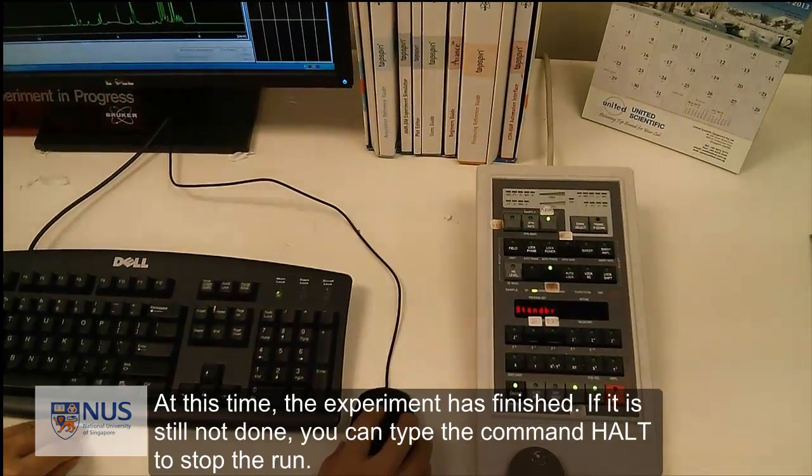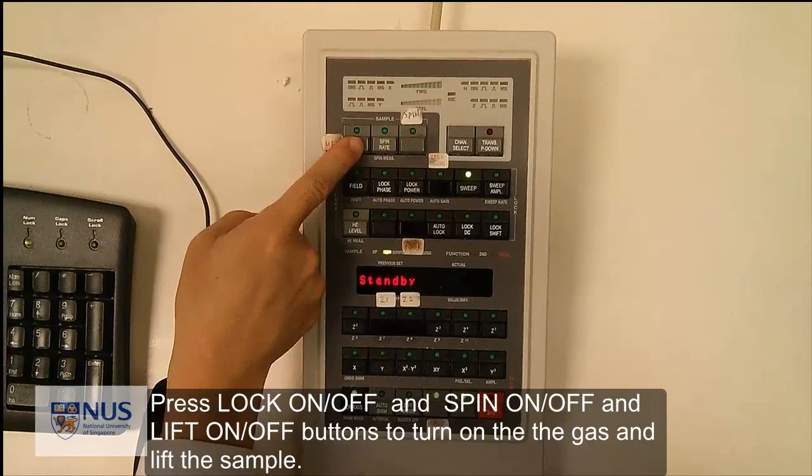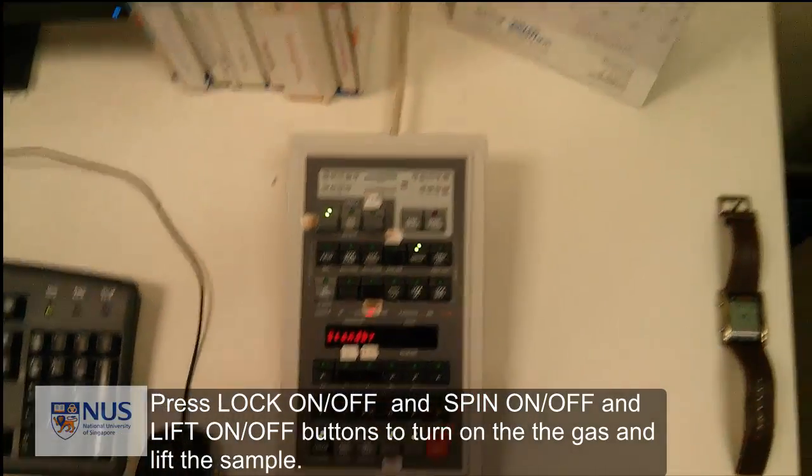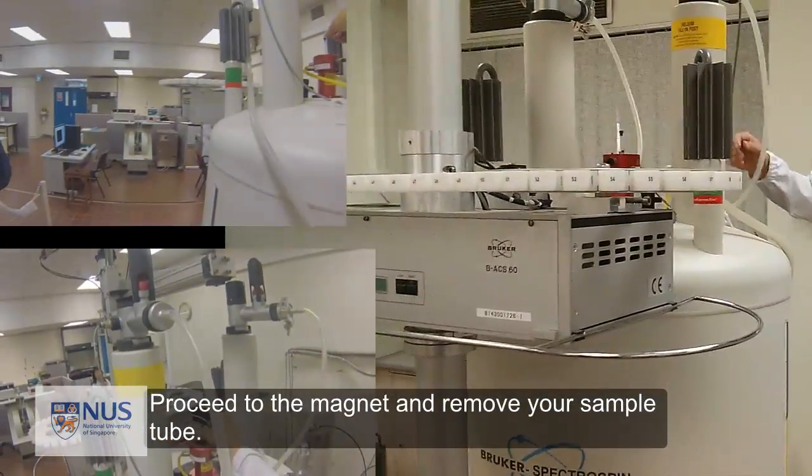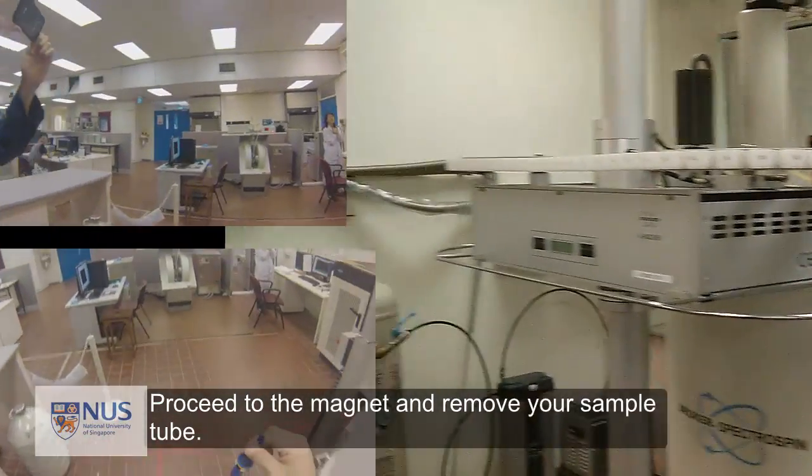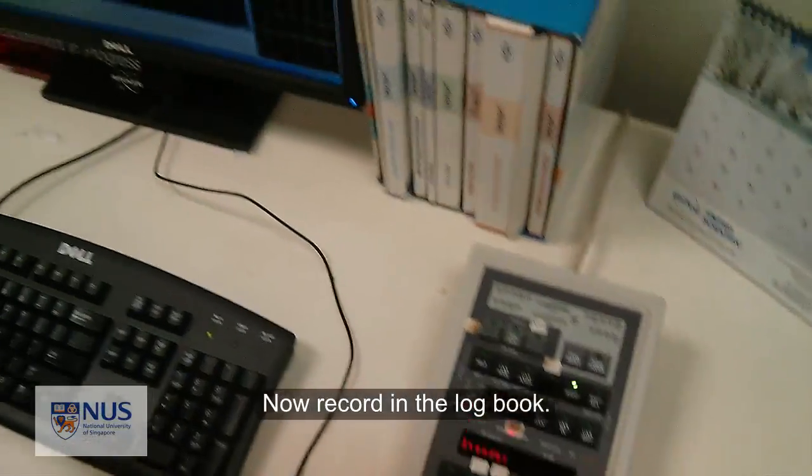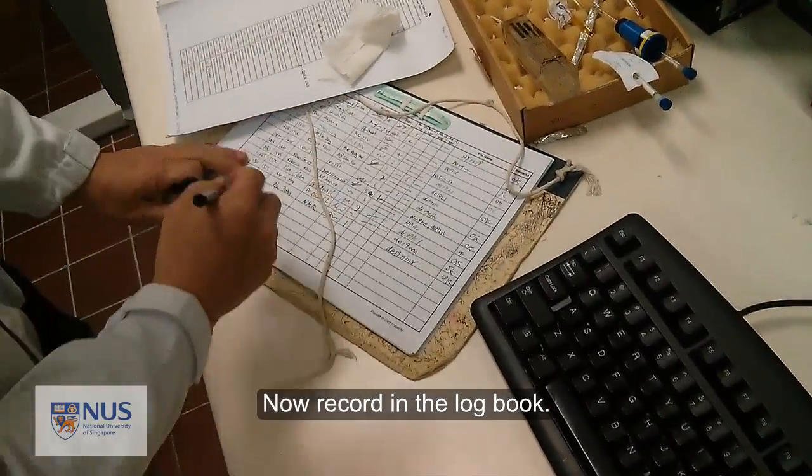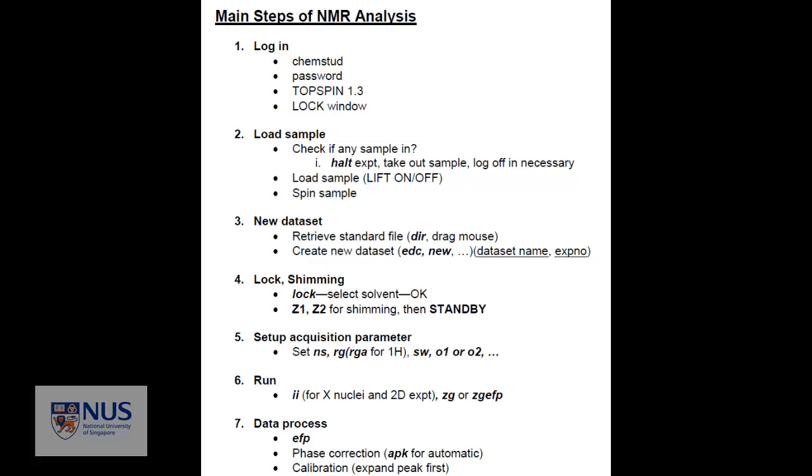At this time, the experiment has finished. If it is still not done, you can type the command HALT to stop the run. Press the lock and spin button and lift button to turn on the gas and lift the sample. Proceed to the magnet and remove your sample tube. Come back to the command center and press lift button again to turn off the air. Now, record in the logbook. These are the short summaries for the NMR technique for both sample preparation and NMR analysis. Do practice more to become better at this technique. I'm Funman. Thanks for watching this video. Have a nice day.